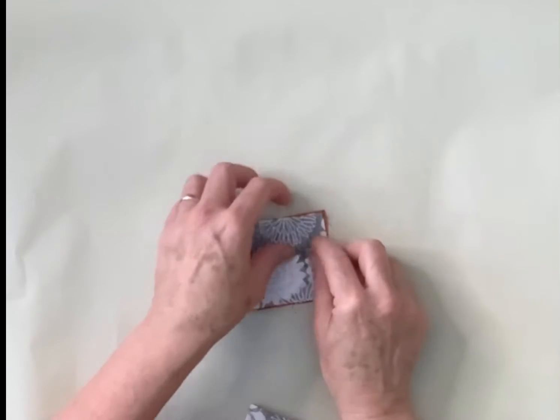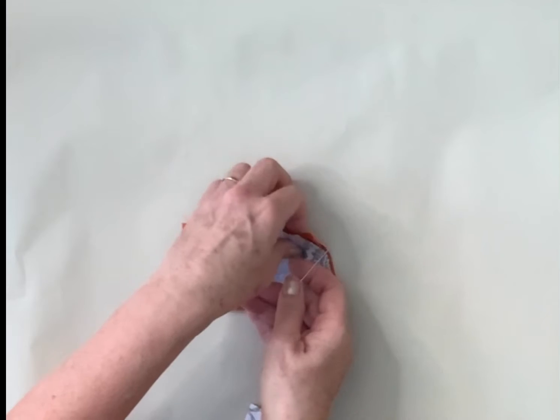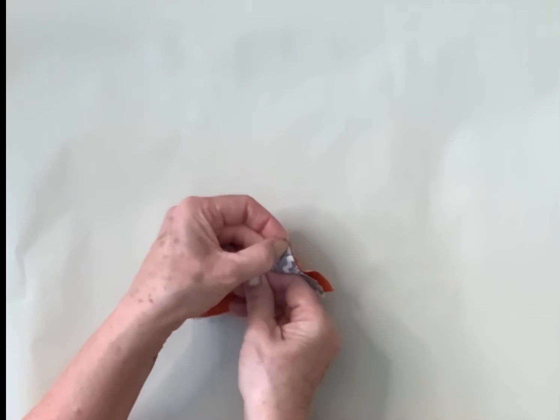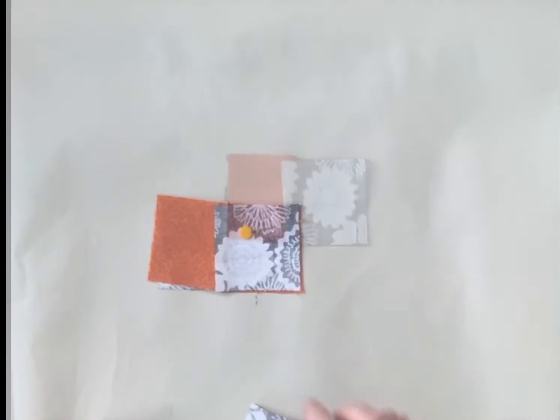And this one goes on the top and we're doing this side of the H. We're now going to be pinning this one here and we're going to sew all the way along there.